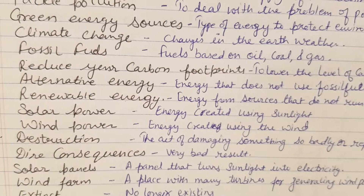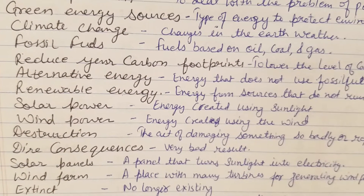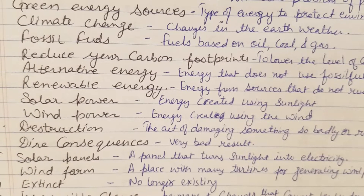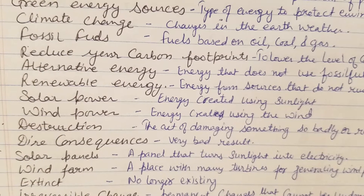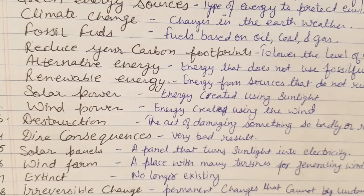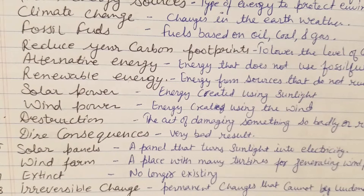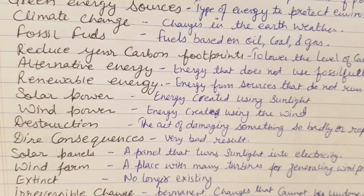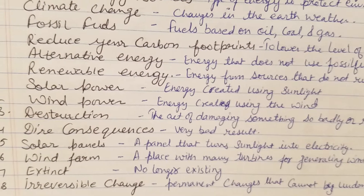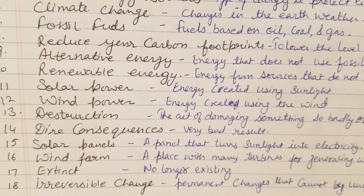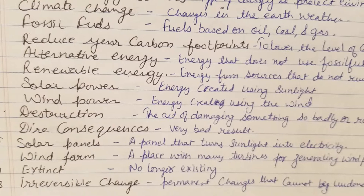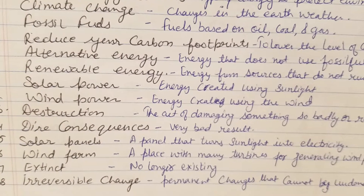Solar panels turn sunlight into electricity. This is also one of the important terms. Next is wind farm. Wind farm: a wind farm has been running for several years. A wind farm means a place with many turbines for generating wind power. Next is extinct — extinct means no longer existing. Dinosaurs became extinct millions of years ago.